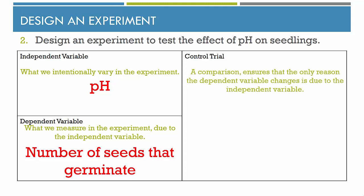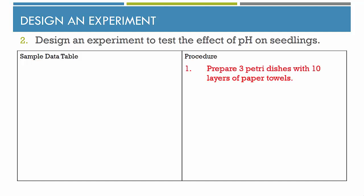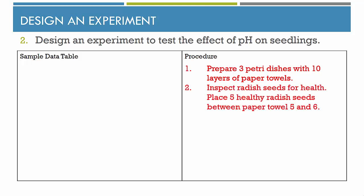The control trial is a comparison. It ensures that the only reason the dependent variable changed was due to the independent variable. For us, this is going to be distilled water with a pH of 7. For our procedure, we can prepare petri dishes with 10 layers of paper towels, inspect radish seeds to make sure there's nothing visually wrong with them, and place 5 between paper towel layers 5 and 6. Then add 20 milliliters of each pH solution — pH 2 for acidic, pH 7 for our control, and pH 12 for basic.